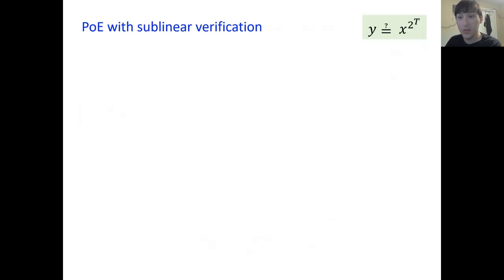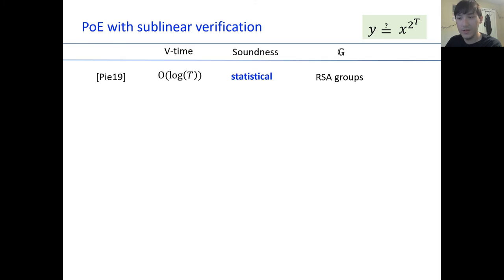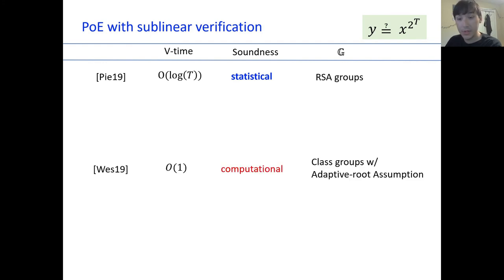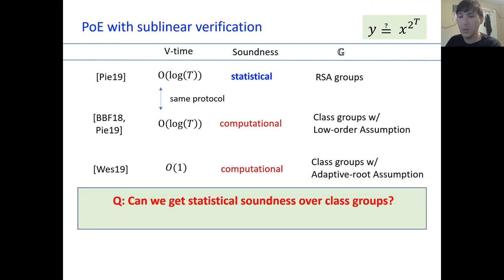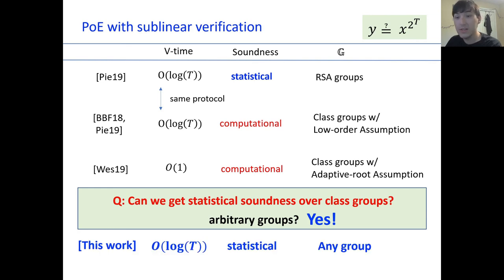There are a couple of works with sublinear verification. Pietrzak's PoE is a statistically sound protocol in RSA groups, where the verifier runs in logarithmic time. Wesolowski gives a computationally sound protocol assuming class groups with something called the adaptive root assumption, and the verifier time is constant. Then Boneh et al. observed that Pietrzak's protocol is also computationally secure assuming other group assumptions, mainly class groups with the low-order root assumption. Our main question here is: can we get a statistically sound PoE over class groups, or arbitrary groups for that matter? And in fact, yes — in this work we give a statistically sound PoE that works over any group with logarithmic verification.